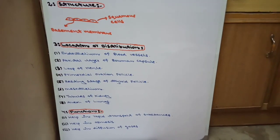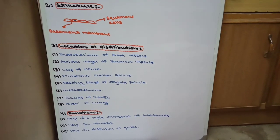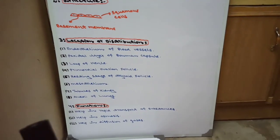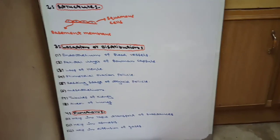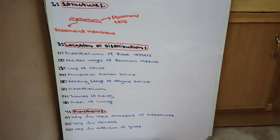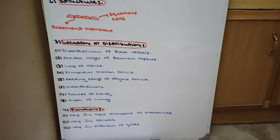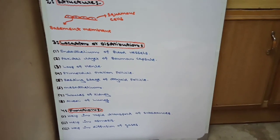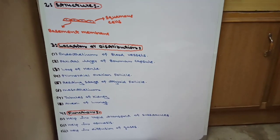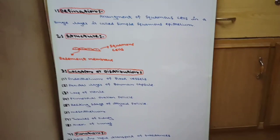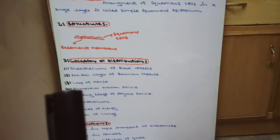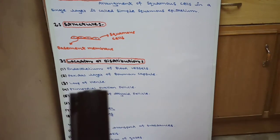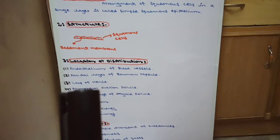Number seven: tubules of the kidney — kidney tubules are lined by simple squamous epithelium. Number eight: alveoli of the lungs — where gaseous exchange occurs, the alveoli of the lungs are lined by simple squamous epithelium. These are the eight locations or distributions of simple squamous epithelium.